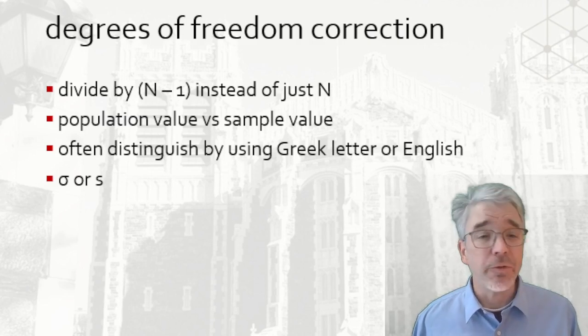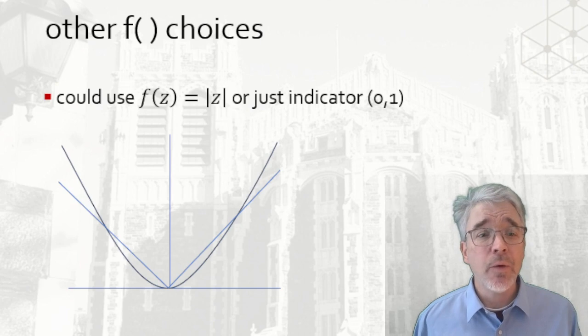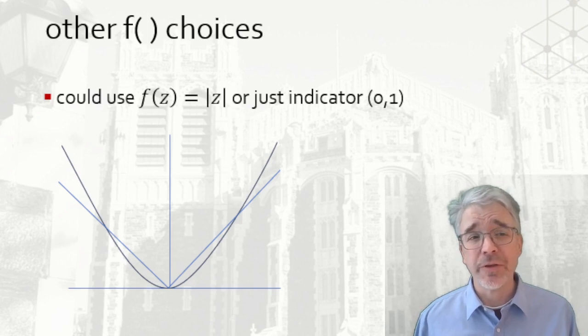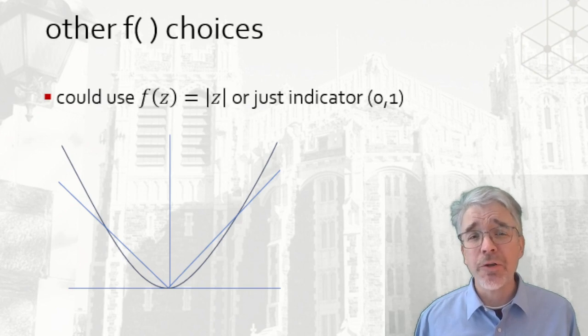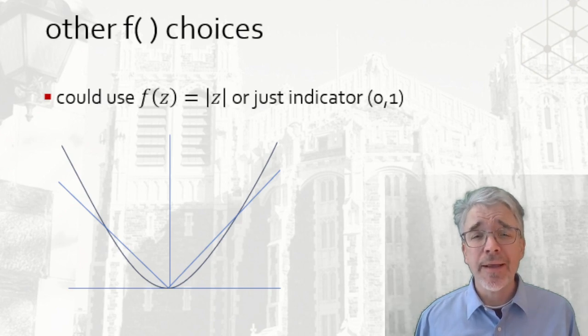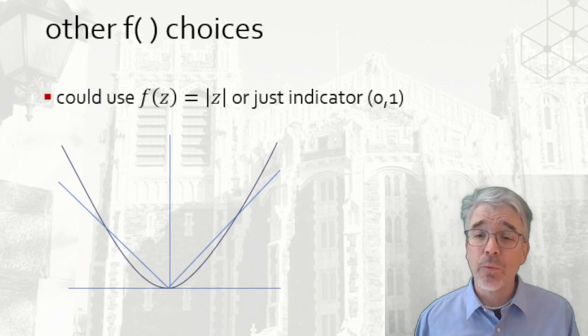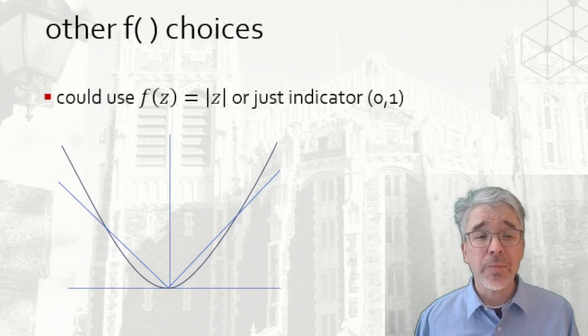We could look at other functions of the distance of the data from the central measure—other f such that sum of f(xᵢ - x̄) is not going to be zero. For example, could use the absolute value. Recall the graphs of those two functions: you can begin to appreciate how they differ. One is a parabola and the other is just a straight line with an angle at zero. Squaring the distance counts large deviations much worse than small deviations, whereas absolute value deviation does not. So if you're trying to hit a central target, it might make sense that wider and wider misses should be penalized worse, while tiny misses maybe get hardly counted.